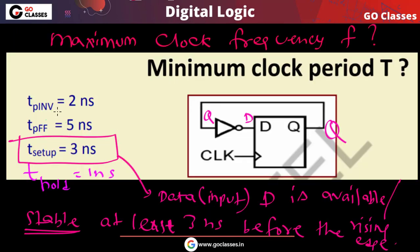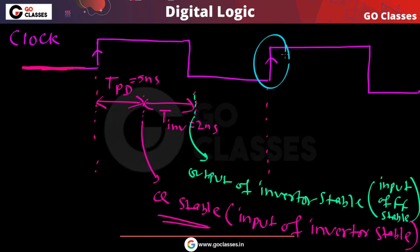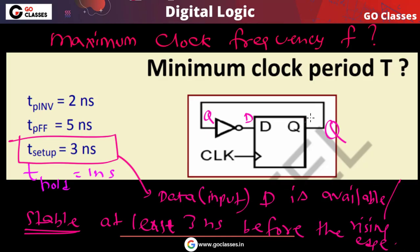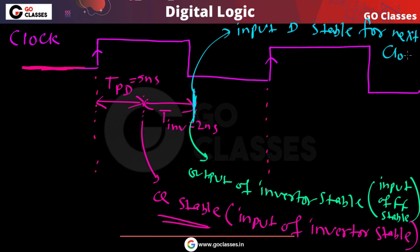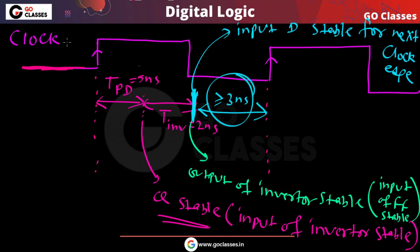This input D for the next clock cycle is now stable. But remember, because the setup time is 3 nanoseconds, this input D must be stable at least 3 nanoseconds before the next rising edge arrives.